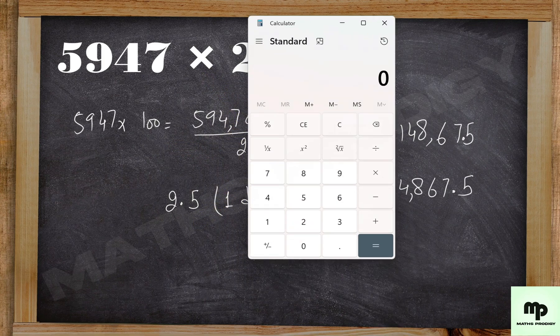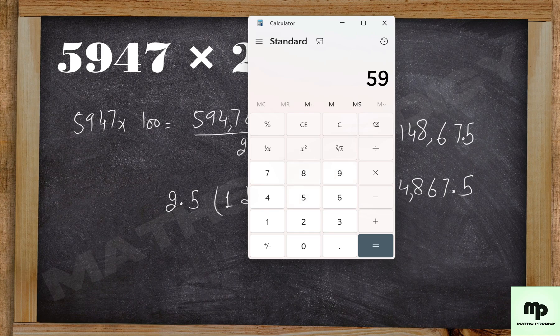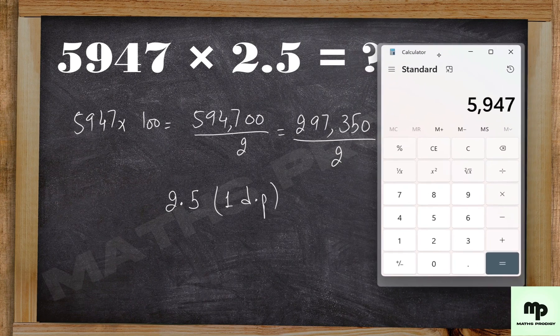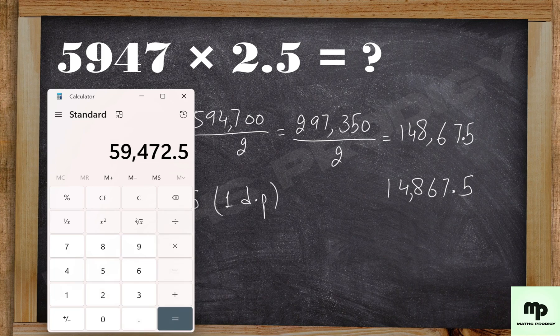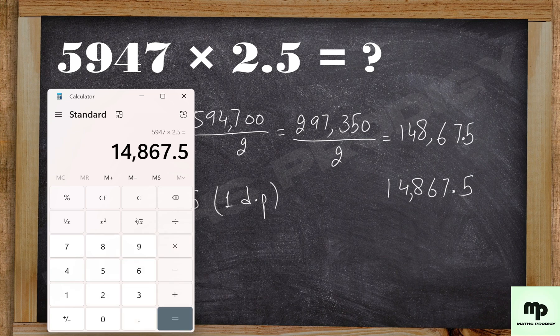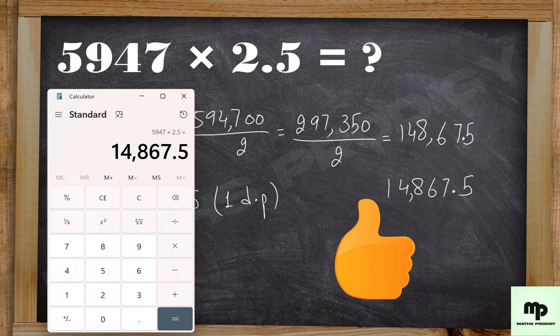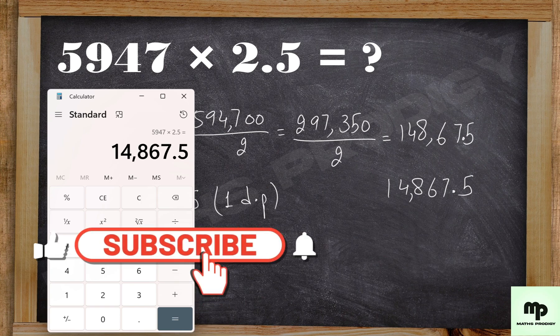We can check this on the calculator. If I have to multiply 5947 by 2.5, the answer is 14867.5. Here you go. Keep liking, keep sharing the channel. Meet you again with the new video.